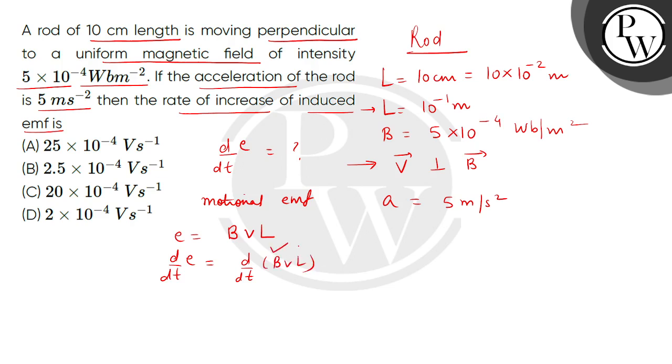Now here we can see B and L are constants, so it will be BL multiplied by dV/dt. Rate of change of velocity is called acceleration, so we have to find BLA.